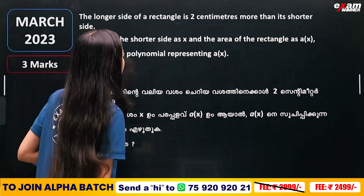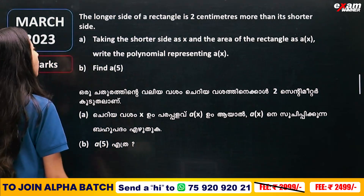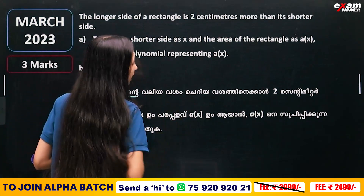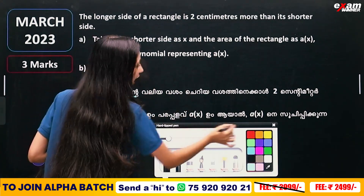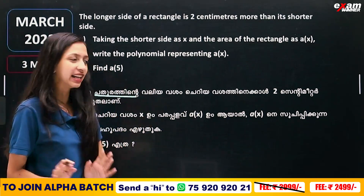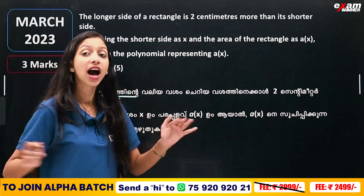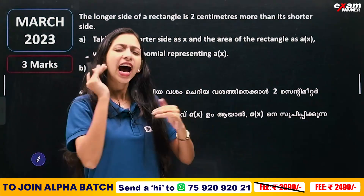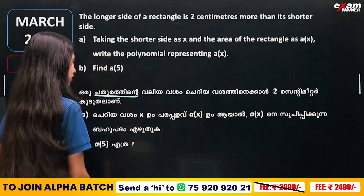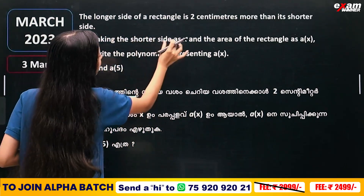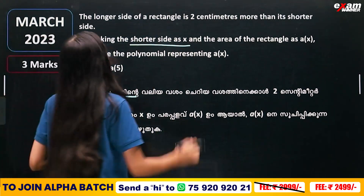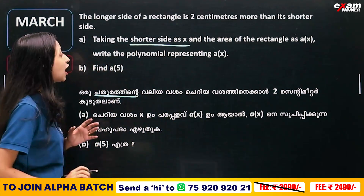The longer side of a rectangle is 2 cm more than its shorter side. Taking the shorter side as x and the area of the rectangle as A of x, write the polynomial representing A of x.